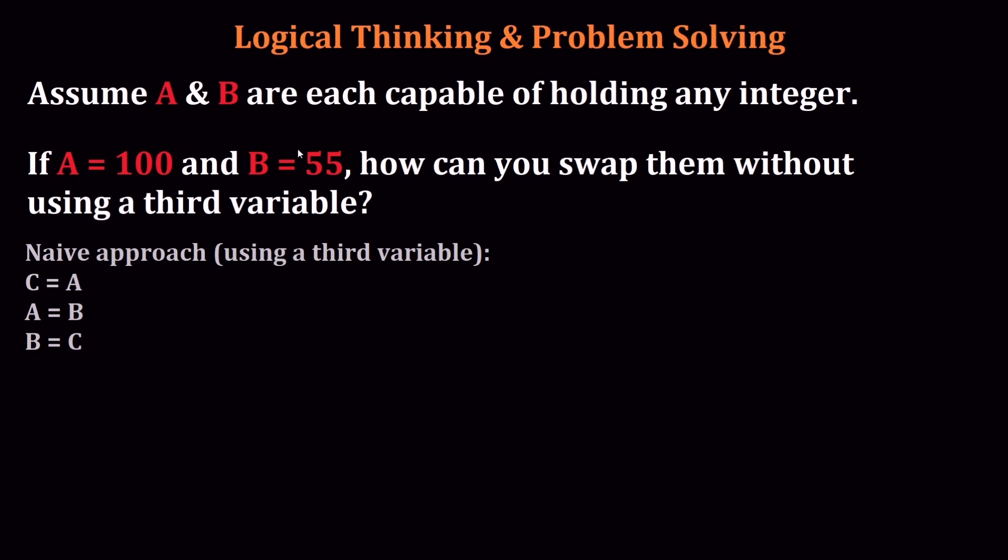And B is going to be 100. But I want you to be able to swap A and B without doing it this way. You can't use the third variable. So go ahead and pause this and try to think. And don't cheat because yeah, you can find the answer on the internet, but what's the point? I'm just curious if you're able to do it.